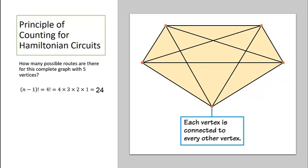But keep in mind that every route has been counted twice. So how many possible unique Hamiltonian circuits are there? We need to divide by 2. So 24 divided by 2 tells us that there are 12 unique Hamiltonian circuits.